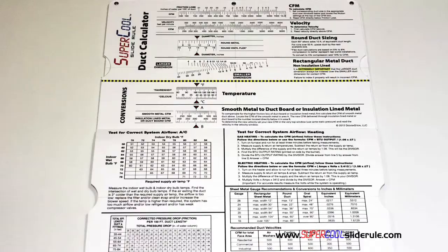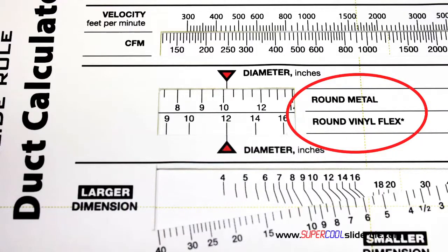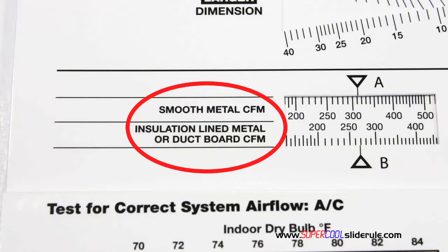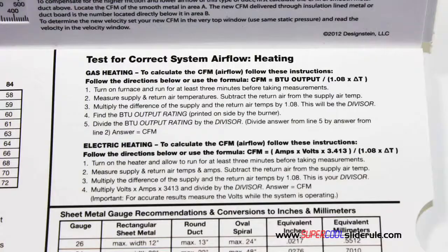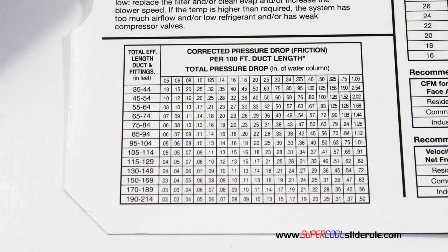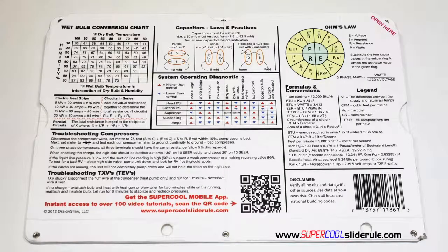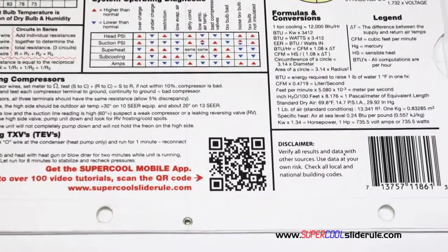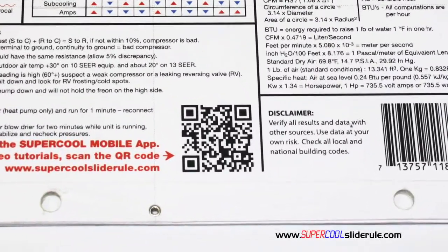Inside is packed with even more information. It performs sizing of both metal and flexible duct, and has the only direct reading conversion from smooth metal to insulation-lined metal we've ever seen. The majority of technicians have never been taught that if insulation is on the inside of the ductwork, you cannot size it with a regular duct calculator. It has step-by-step directions for determining airflow through a gas furnace, electric furnace, or an air conditioning unit. It has pressure drop multipliers for ductwork as well as recommended velocities. And finally, scanning the QR code gives instant access to over 100 tutorials to assist the technician with every test and repair imaginable.